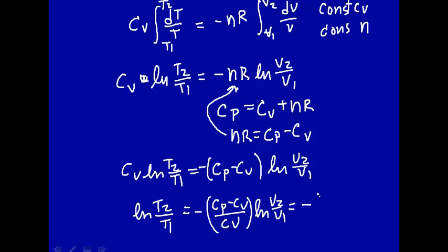And that's equal to, let's see, divide this thing here, minus cP over cV minus 1, natural log of V2 over V1.